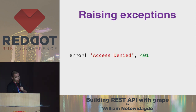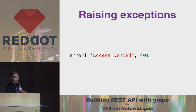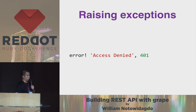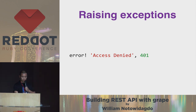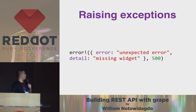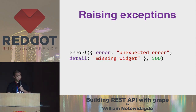For raising exceptions, you can use a helper — error — and then you can define what code you want to return to the client. But also you can return JSON instead of a message.